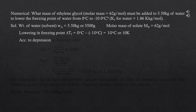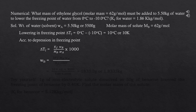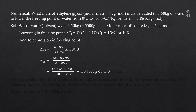Using the formula ΔTf = Kf × (Wb / Mb × Wa) × 1000, we rearrange to find Wb: Wb = (ΔTf × Mb × Wa) / (Kf × 1000) = (10 × 62 × 5500) / (1.86 × 1000) = 1833.3 g, or approximately 1.833 kg.